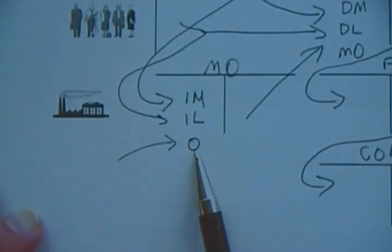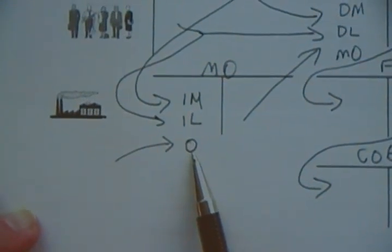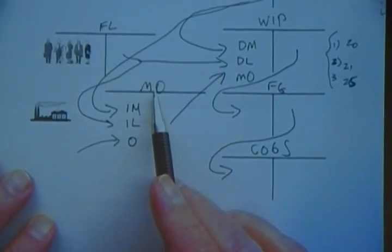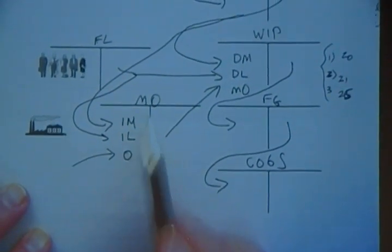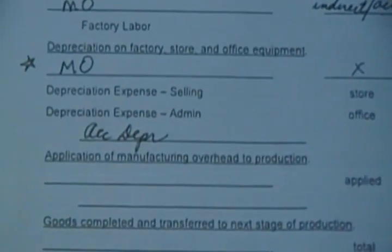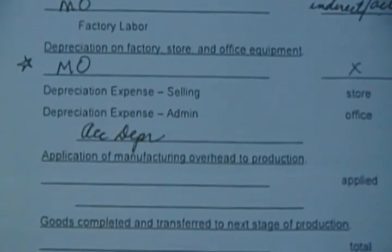Does this mean anything to you? We're going to debit manufacturing overhead — this is called manufacturing overhead — and credit accumulated depreciation. Debit manufacturing overhead for the depreciation on the factory equipment. Debit depreciation expense for store and office. Debit depreciation expense. Credit accumulated depreciation.